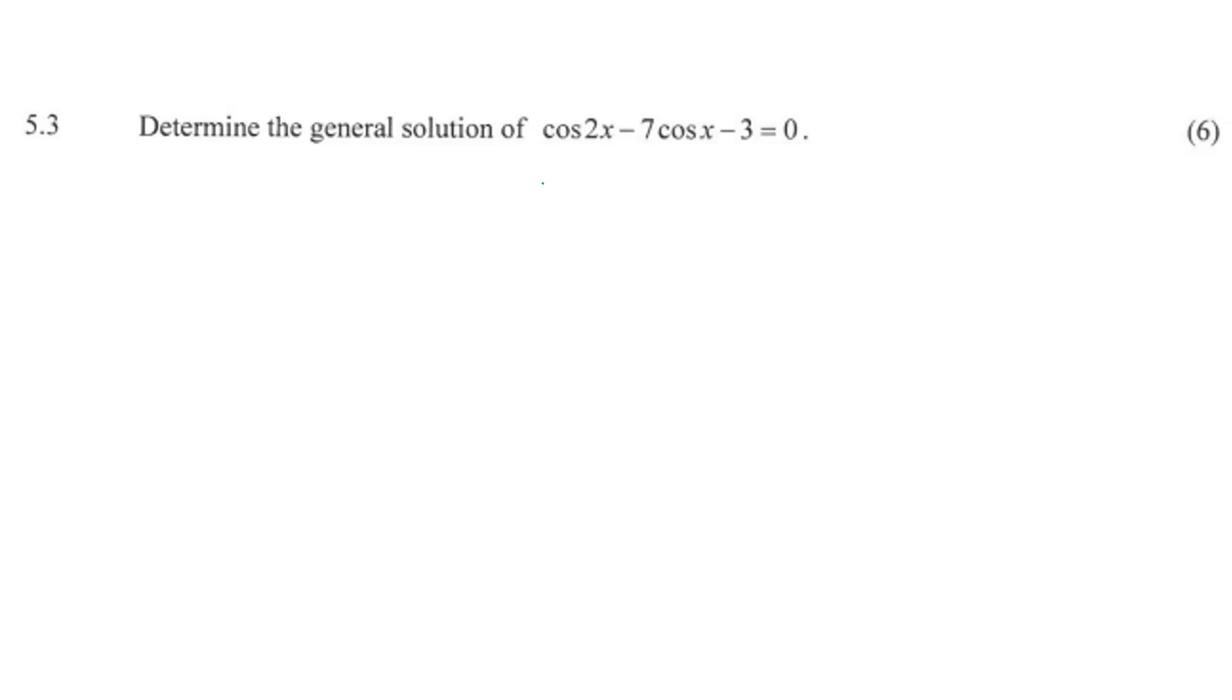In question 5.3, determine the general solution of cos 2x minus 7 cos x minus 3 equals 0.